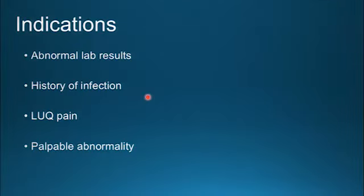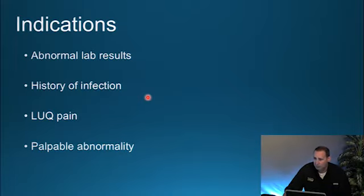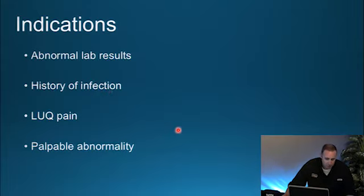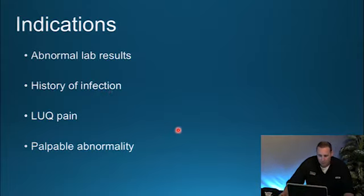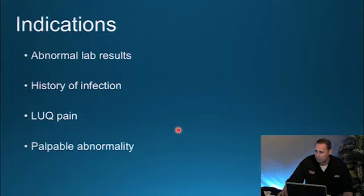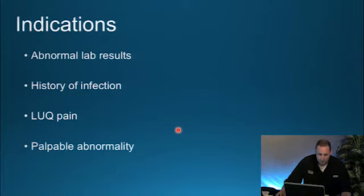Common indications for performing an ultrasound on the spleen include abnormal lab results such as leukocytosis — increased white blood cell production — or leukopenia — decreased white blood cells. You may have a history of infection such as tuberculosis, or increased risk for infection such as a patient undergoing chemotherapy, or recent shock or trauma. Left upper quadrant pain, possibly from trauma, and a palpable abnormality are also very common indications.